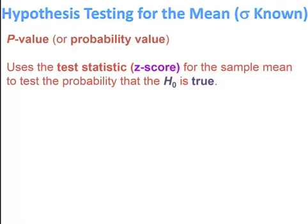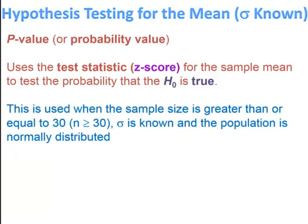Hypothesis testing for the mean when the population standard deviation is known. The p-value, or probability value, uses the test statistic — a z-score for the sample mean — to test the probability that the null hypothesis is true. This method is used when the sample size n is greater than or equal to 30, the population standard deviation sigma is known, or the population is normally distributed.